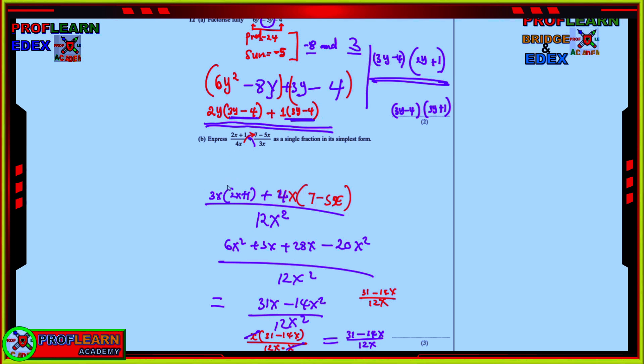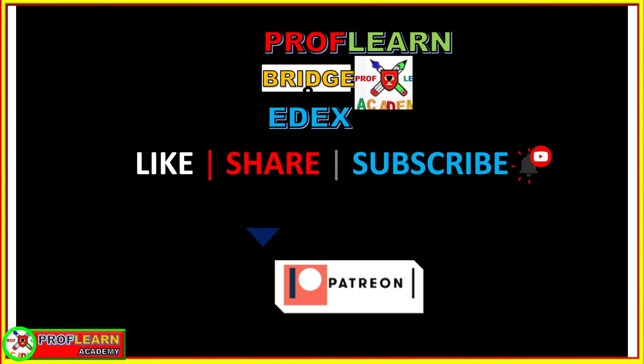Now, for you to express as a single fraction, what do you need to do? You need to multiply this term and this term. And then you are going to get 12x squared. And then you cross multiply, butterfly method. This multiplied there and this multiplied here. So here we are having an addition sign. So we shall have 3x into 2x plus 1. And then 4x into 7 minus 5x. If you simplify it, you are going to get 31x minus 14x squared over 12x squared. But you can factor x out because x is here, x is here and x here. Then we can be able to cancel out. Our final answer is 31 minus 14x over 12x.